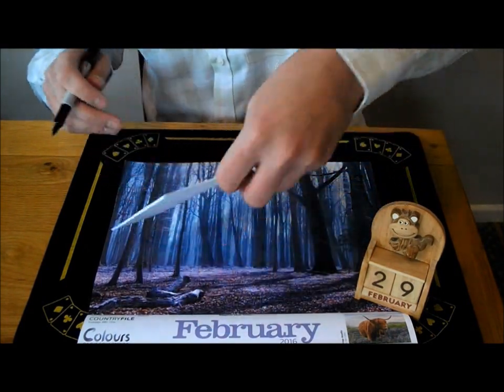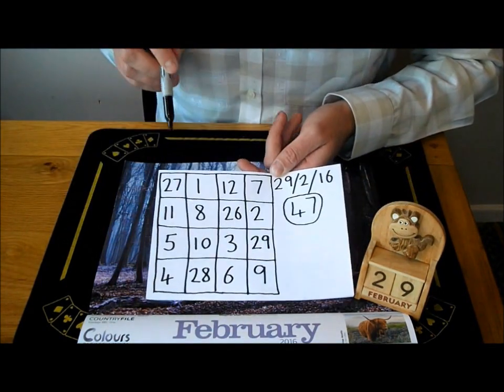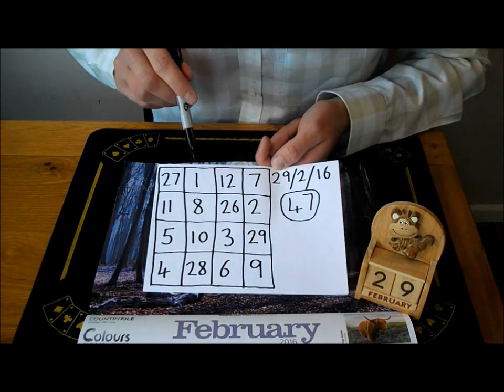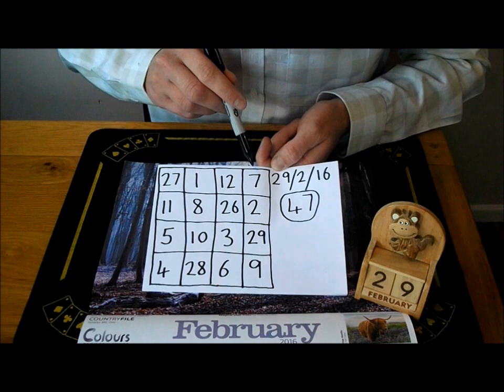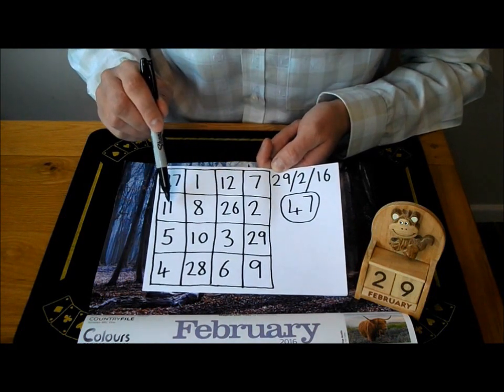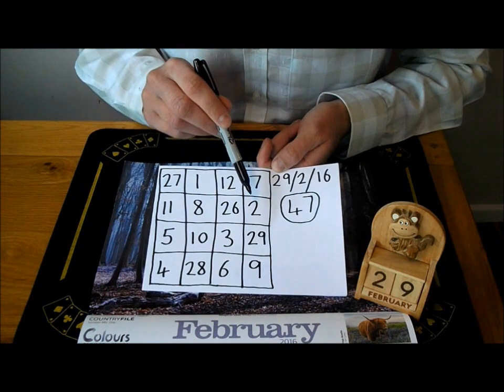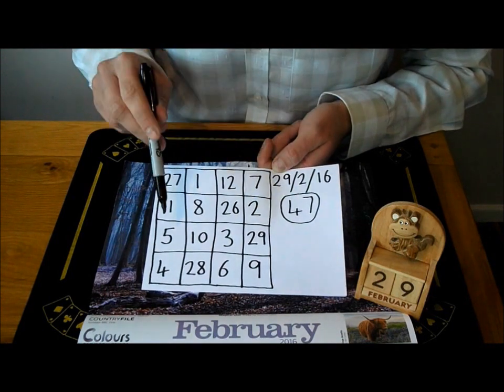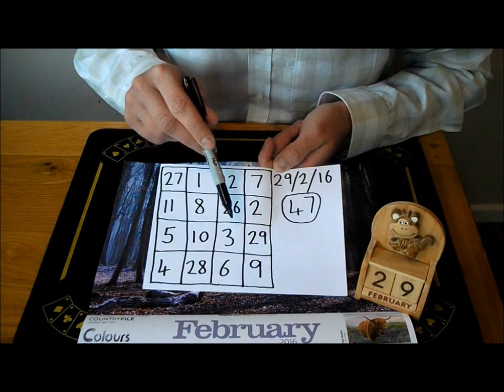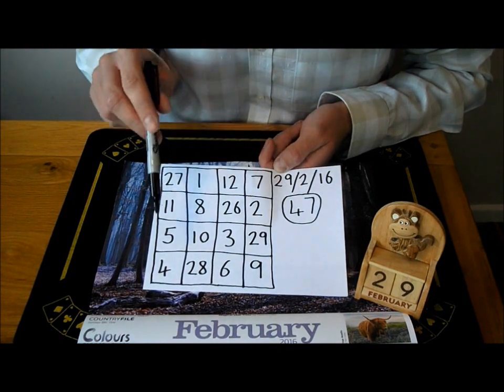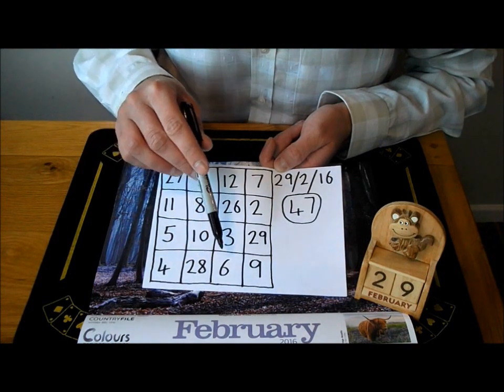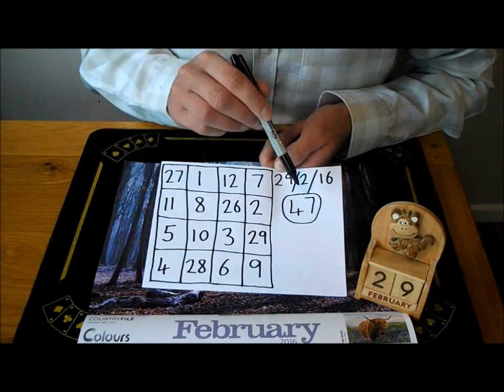Now, if you have a look at the numbers on this grid here, if you add this row here up, 27 plus 1 plus 12 plus 7 is 47. If you go this row here, 11 plus 8 plus 26 plus 2 is 47. If you add this row here up, 5 plus 10 plus 3 plus 29 is 47. If you add this row here up, 4 plus 28 plus 6 plus 9 is 47.